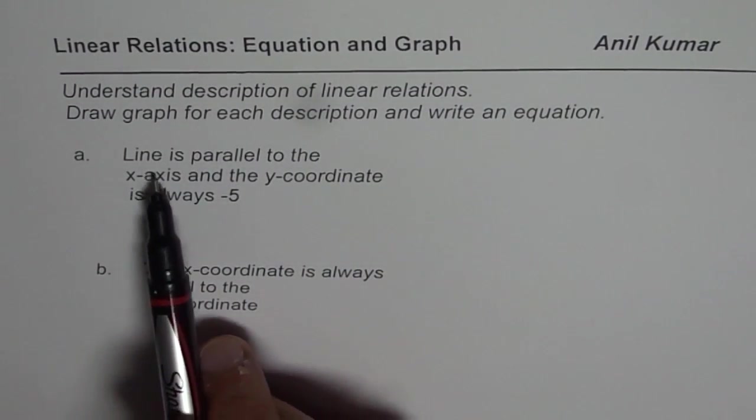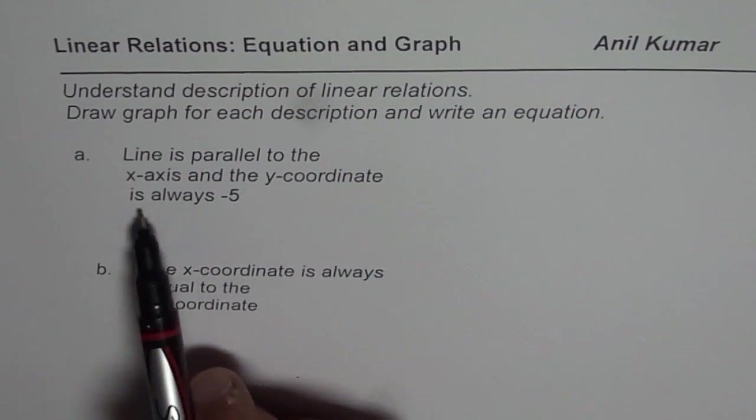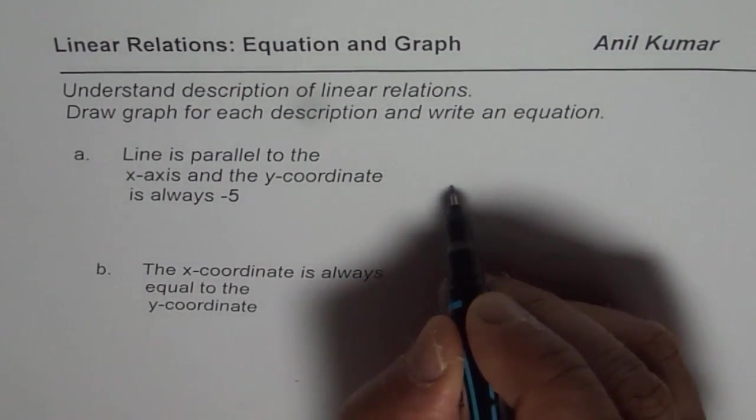Description given to us is: line is parallel to the x-axis and the y-coordinate is always minus 5. Let us try to understand the description.